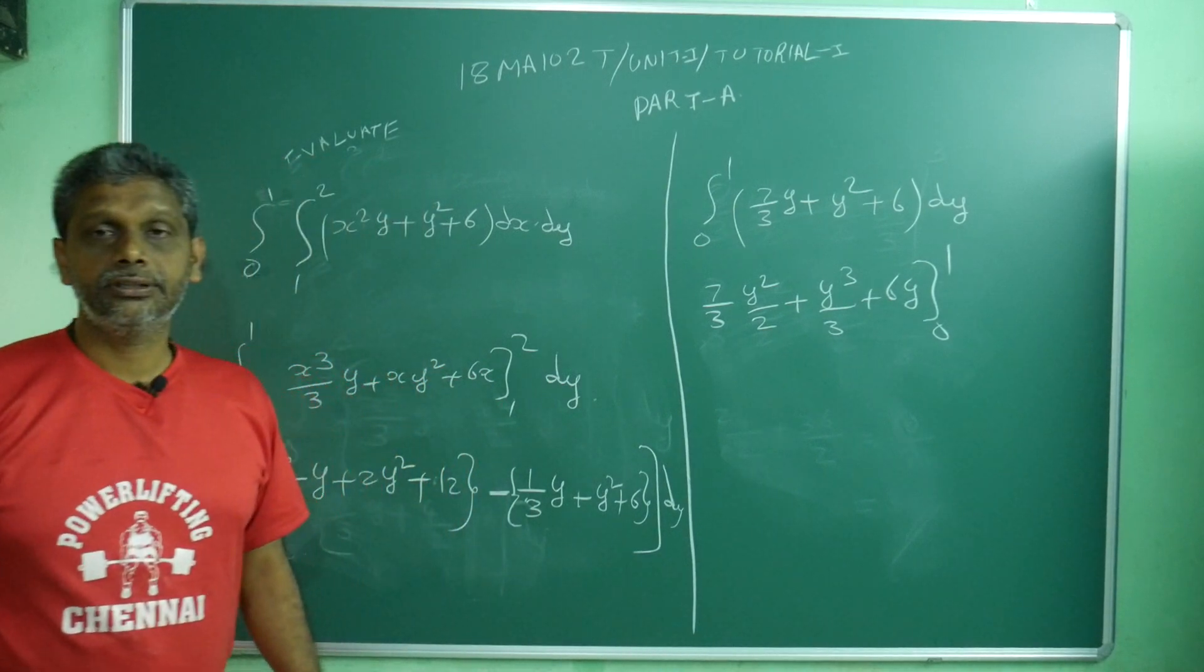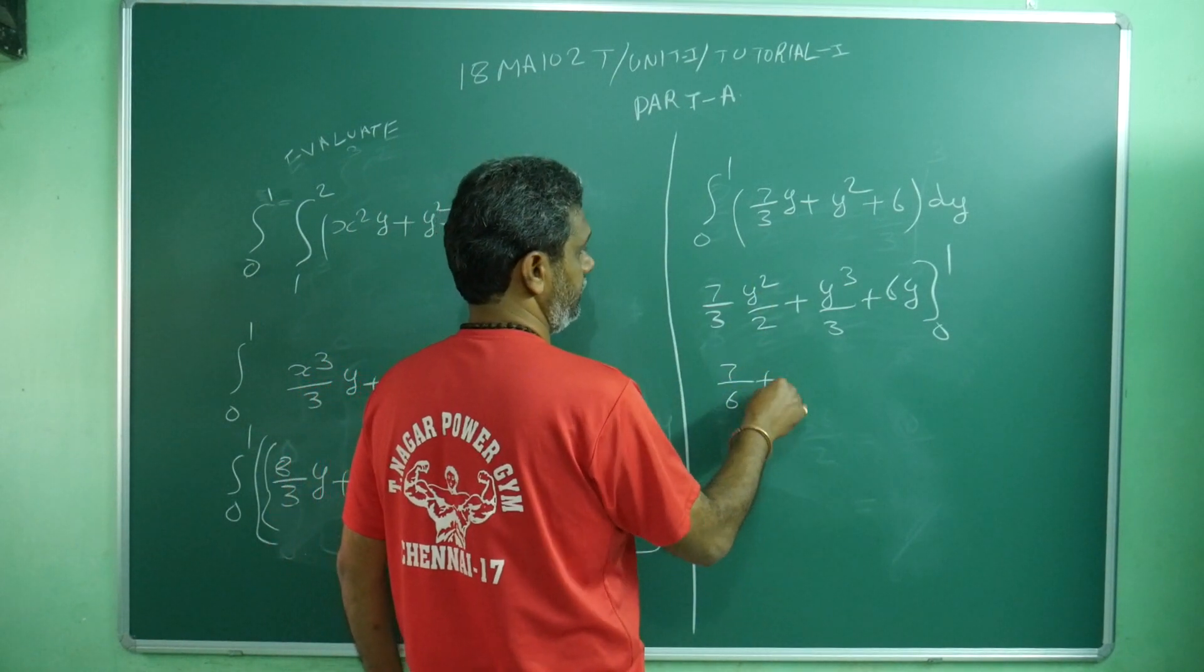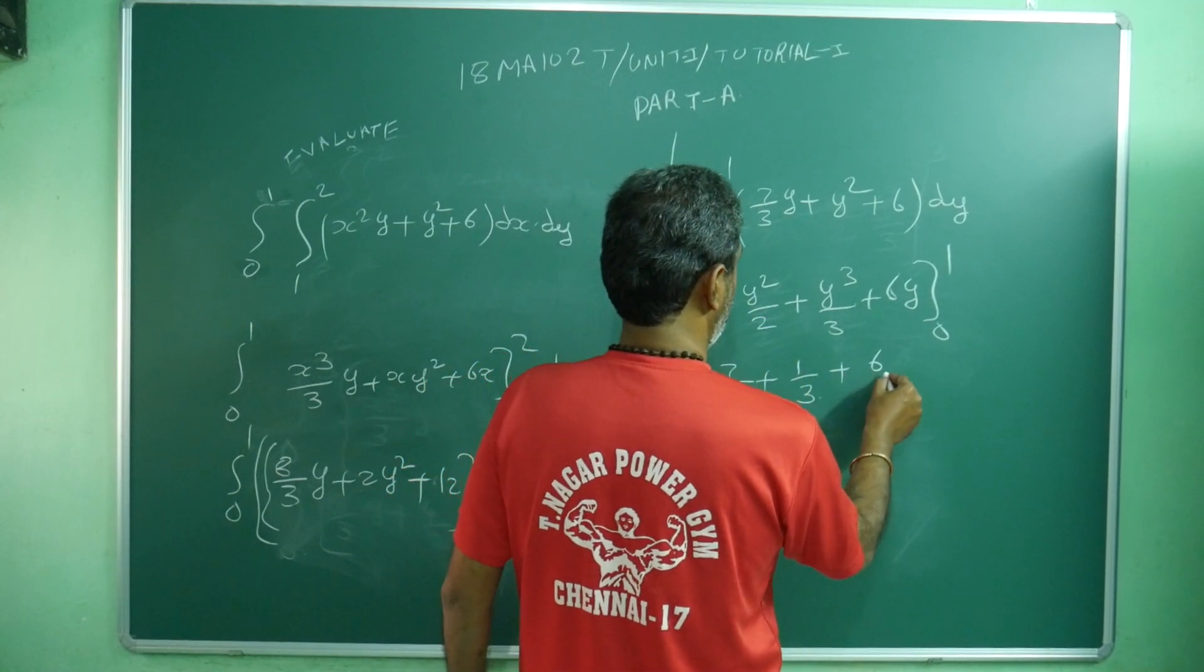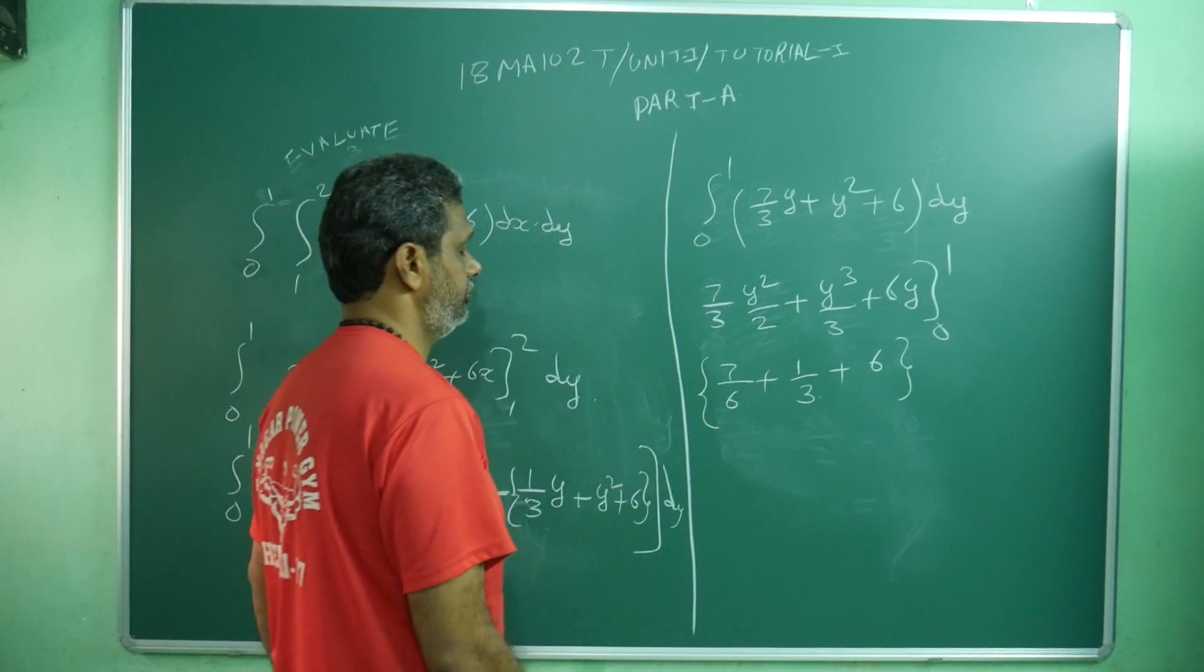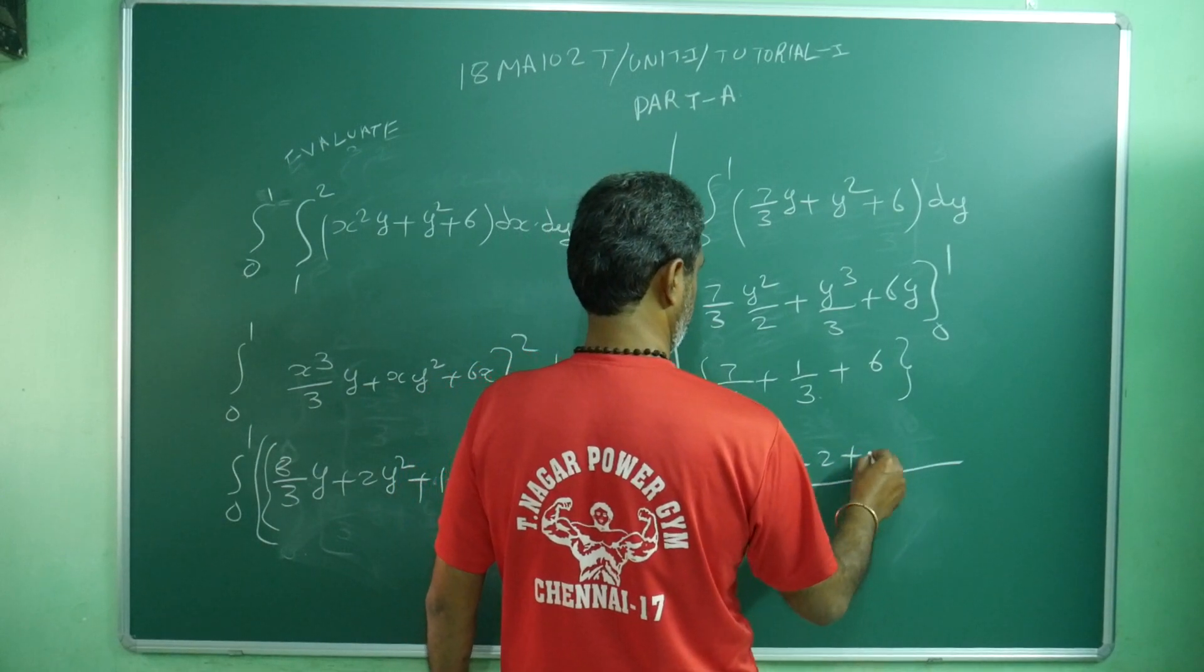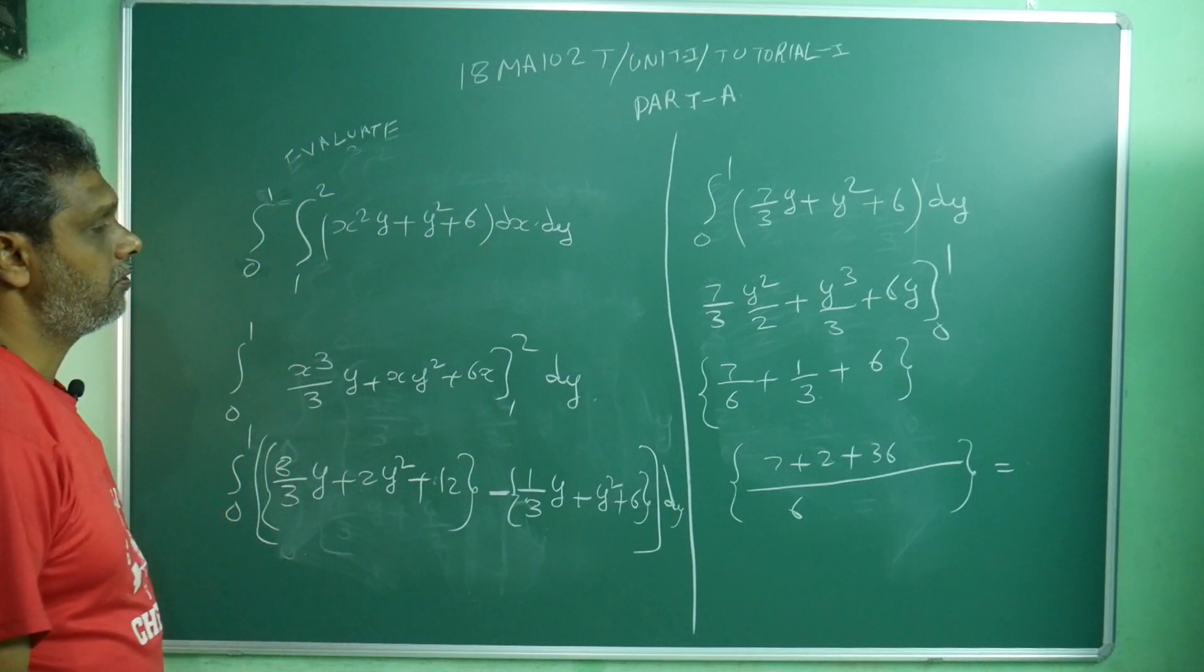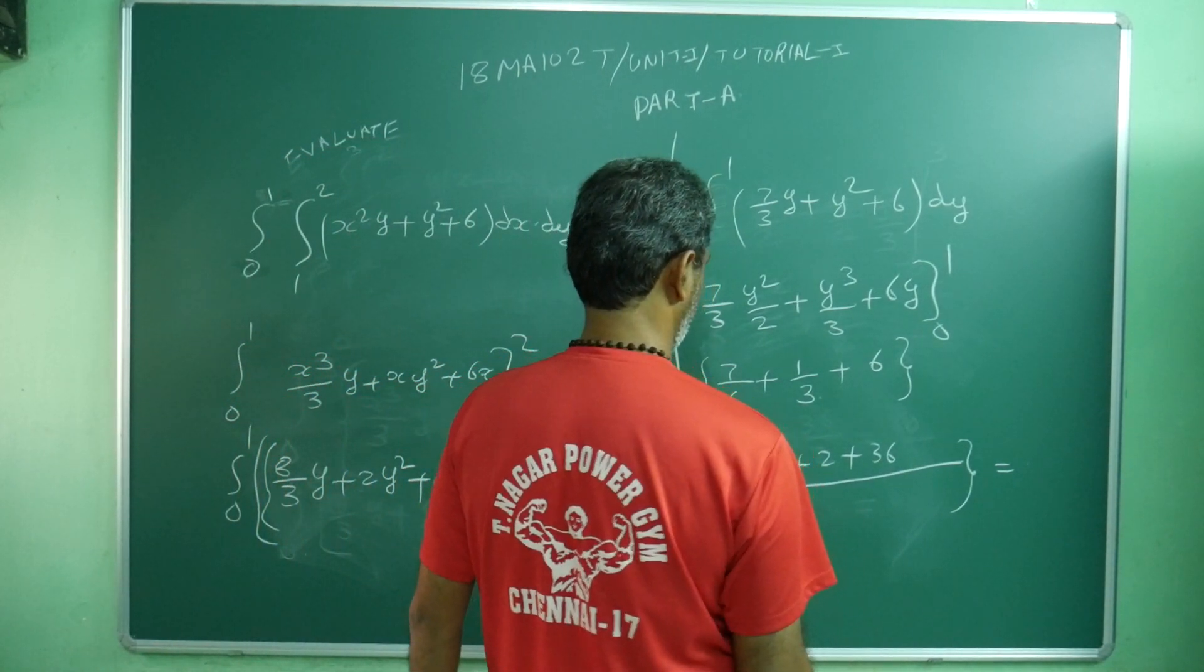Here also lower limit vanish, no use. So we take only upper limit. What you will get here? 1 if I apply means what? 7 by 6 plus 1 by 3 plus 6. Simplify what you will get. Take LCM 6, means what? 7 plus 2 plus 36. That's 45 by 6.